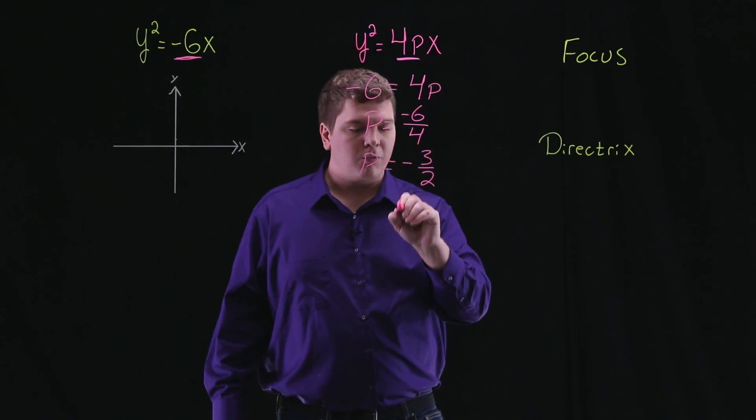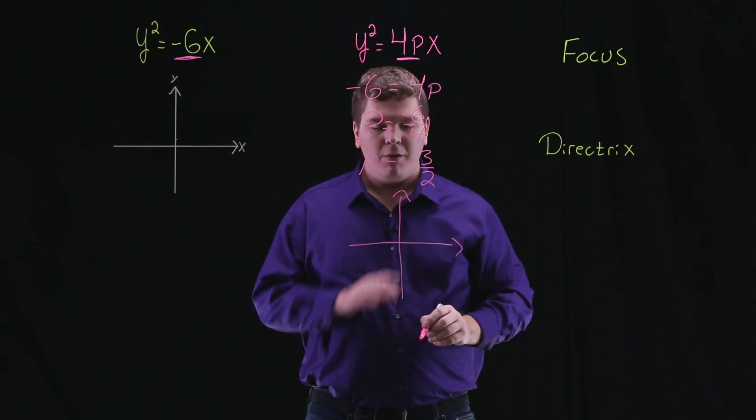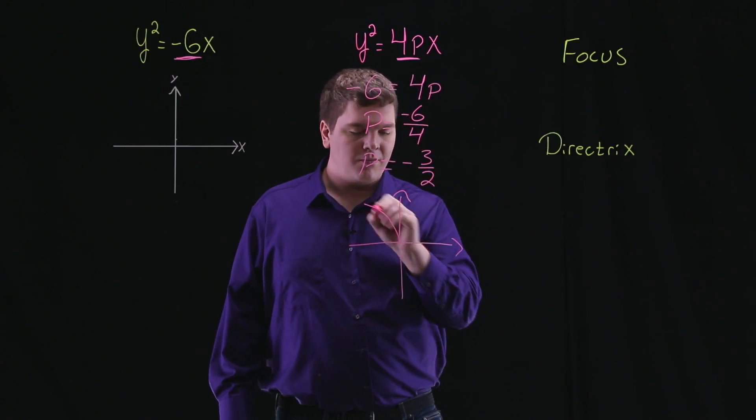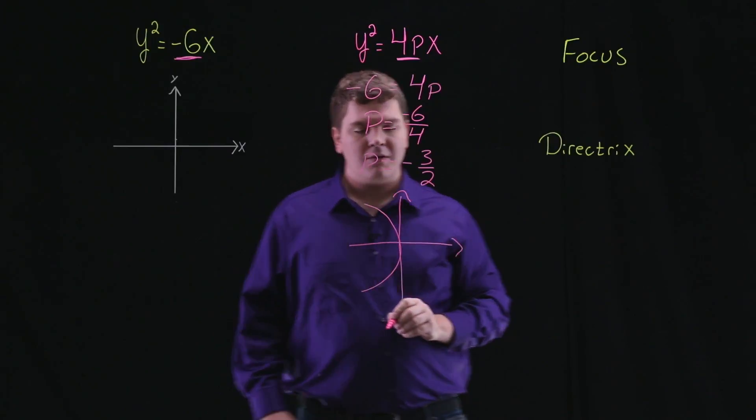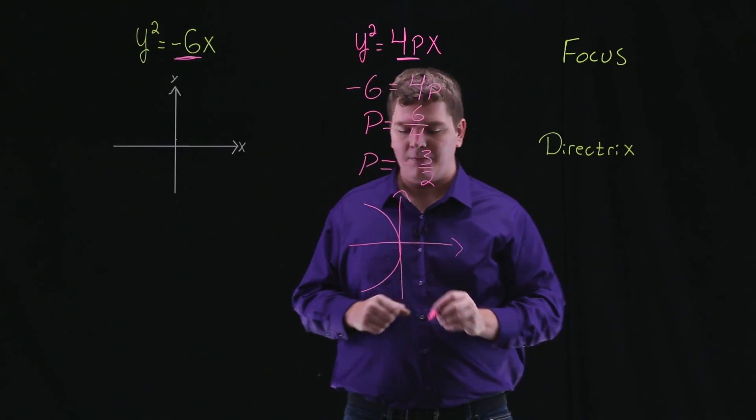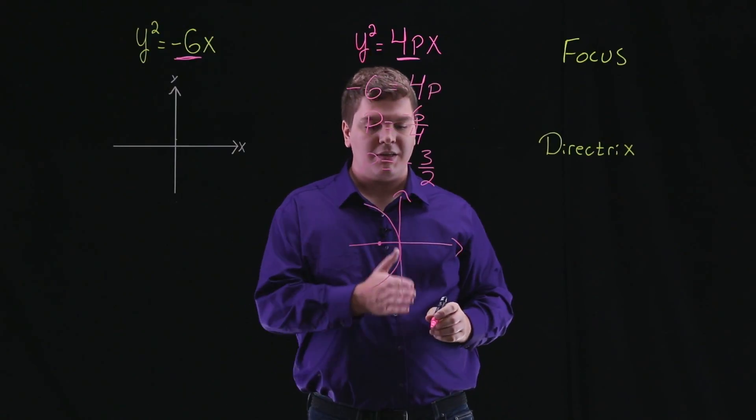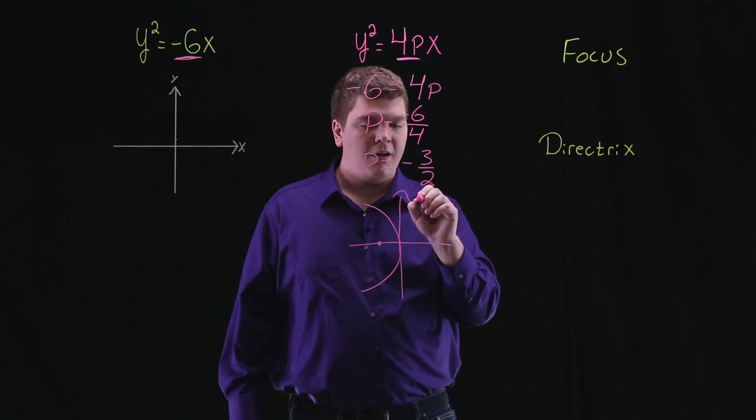If I just roughly sketch a graph here of what this parabola is going to look like, we know that the vertex is at the origin, so the focus is going to lie to the left of the origin, and the directrix is going to lie to the right of the origin.